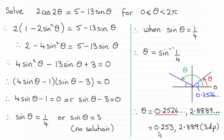So you can see that when rounded we get the required result: 0.253 and 2.889 radians, both to three decimal places.